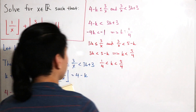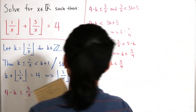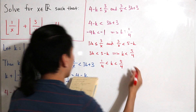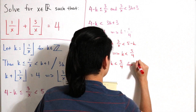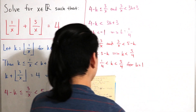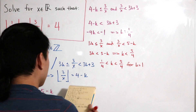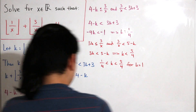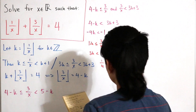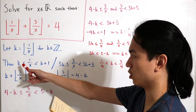Since k must be an integer, the only integer in the interval (1/4, 5/4) is k equals 1. So we plug k equals 1 back into our inequalities.